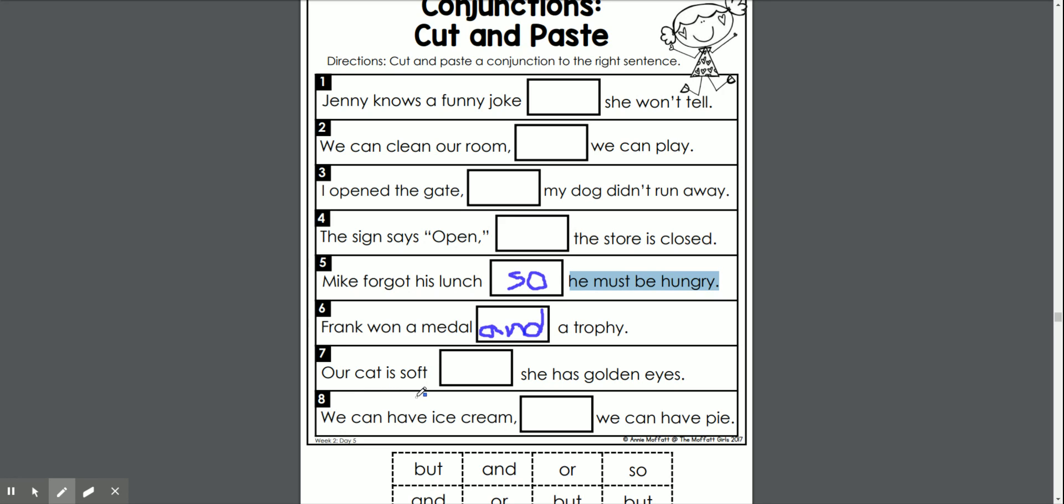See, our cat is soft and she has golden eyes. So if I look, that's both of my ands gone and so's gone.